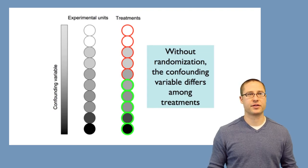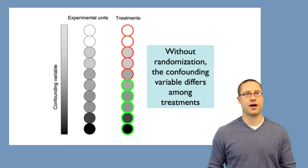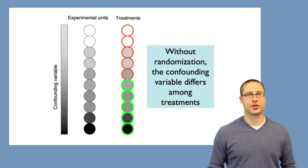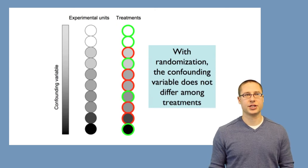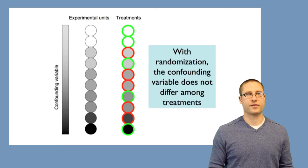Suppose there's another confounding variable — it might be the age, the date, or whatever variable you might consider. In this case, the date or age is related to the treatment: the darker circles more often get the green treatment, and the lighter circles more often take the red treatment. One way to address this is by simply randomly assigning treatment — every new patient comes in and you assign them to either red or green with a coin toss. This breaks down the relationship between the treatment and the confounding variable, regardless of what that confounding variable is.